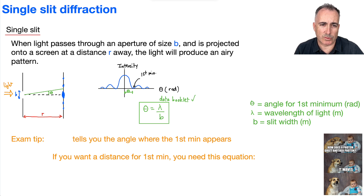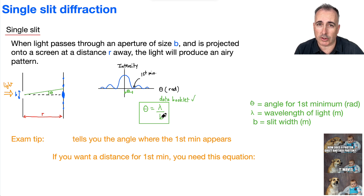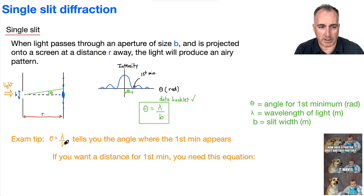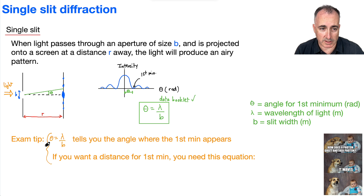What's really important is that this angle is inversely proportional to b. If I make b larger, I'm going to make this angle smaller. If I make b smaller, I'm going to make this angle bigger. The equation theta equals lambda over b tells you the angle where the first minimum appears — that's the first really important thing you need to know.